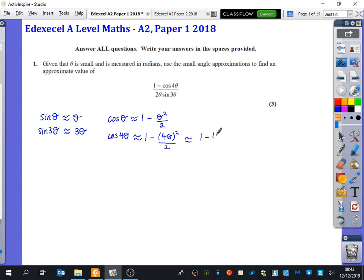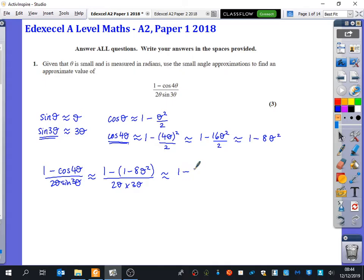So now we've got what cos 4 theta is and what sine 3 theta is, we can try and work out what this approximation is here. So we get 1 minus cos 4 theta over 2 theta sine 3 theta. This is just now going to be substituting in the things we've just found. So it's 1 minus cos 4 theta, make sure it's bracketed for the cos 4 theta, which is this value here, which is 1 minus 8 theta squared, all over 2 theta, multiplied by sine 3 theta, which we've said is 3 theta. We get that this is approximately equal to, carefully expanding the brackets, you get 1 minus 1 plus 8 theta squared, all over 6 theta squared. So we get 8 theta squared divided by 6 theta squared. Obviously the theta squareds are going to cancel, and the 8 over 6 is going to simplify to 4 over 3. So first question done, 3 marks out of the way.